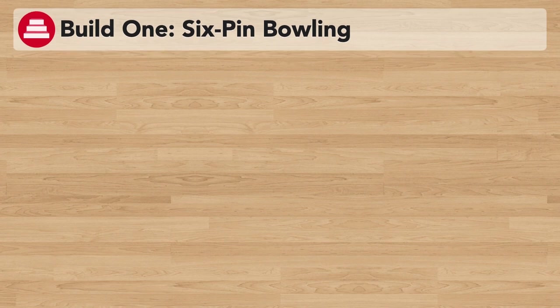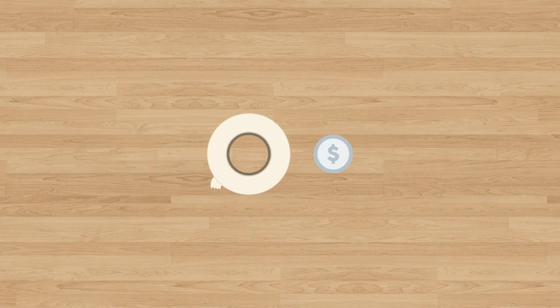Okay, so for the first build we're going to set up some 6-pin bowling. Now the first thing you're going to do is have to set up some pin markers on the ground. And to do this you're going to need something like some tape or some coins.